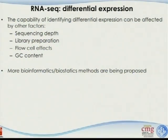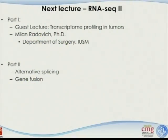In summary, the capacity for identifying differential expression can be affected by multiple factors including sequencing labs, library preparation, flow cell effects, and GC content. More and more bioinformatics and statistical methods are being developed at this stage — something comes out every day. For the next lecture, there will be two parts: first a guest lecture on transcription profiling in tumors, and then I'll finish with alternative splicing study and gene fusion identification. Have a nice weekend.